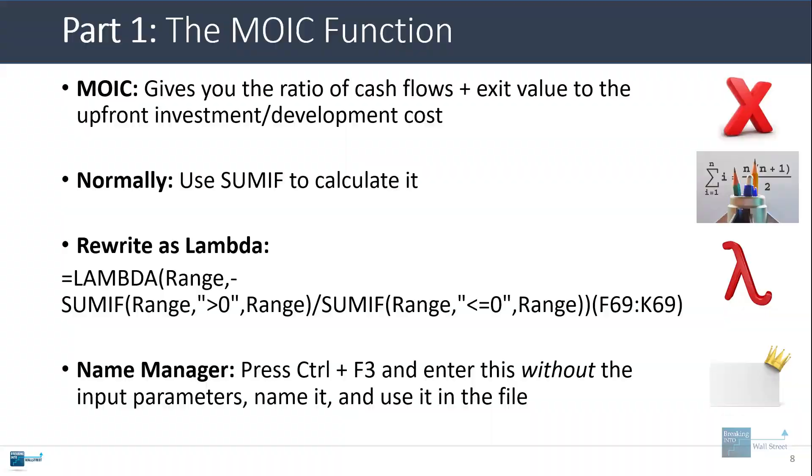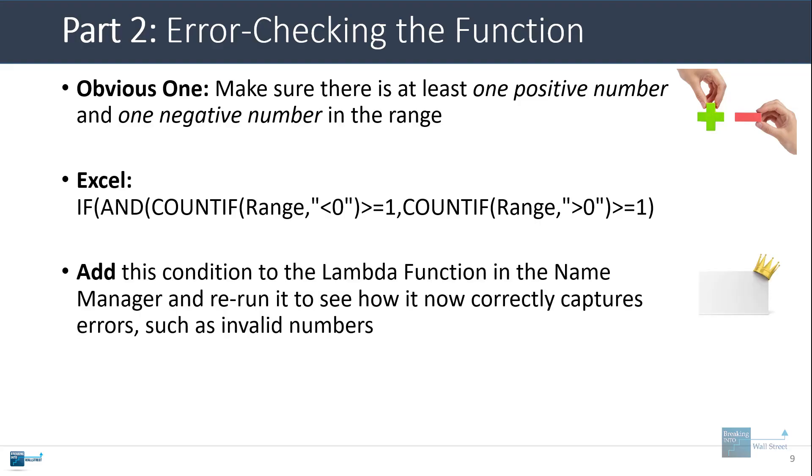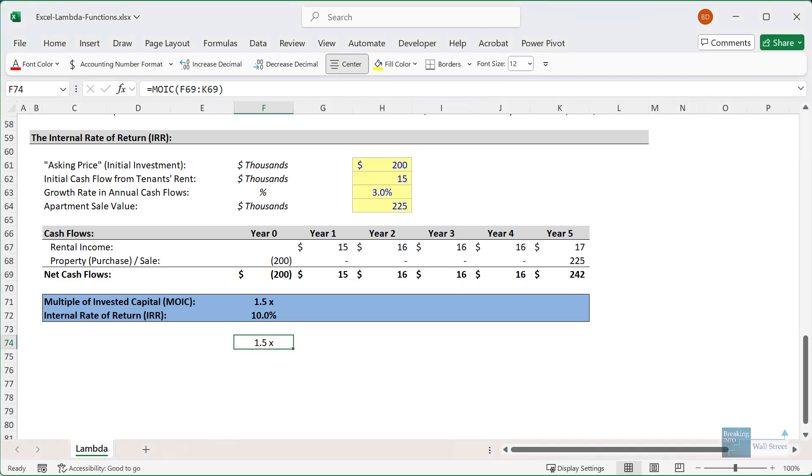The most obvious way to do this is to make sure there's at least one positive number and one negative number in this range. And to do this, we can use the COUNTIF function and apply it to the range and make sure there's at least one number that's less than zero, and then one number that is greater than zero. And then we can add this condition to the lambda function inside the name manager and rerun it to see how it now correctly captures errors such as invalid numbers.